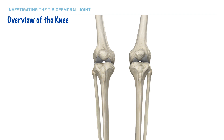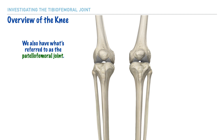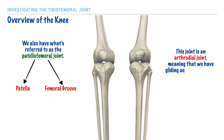Continuing with our overview of the tibiofemoral joint, there is another joint we need to note as well, which we refer to as the patellofemoral joint. Based on the name, it is an articulation between the patella and the femoral groove of the femur. This joint can be classified as an arthrodial joint, meaning that gliding motions take place here. Specifically, the patella glides superiorly and inferiorly within the femoral groove during knee joint motion.